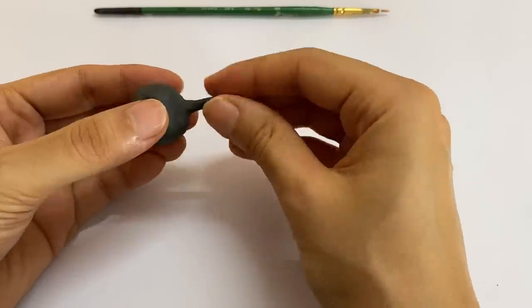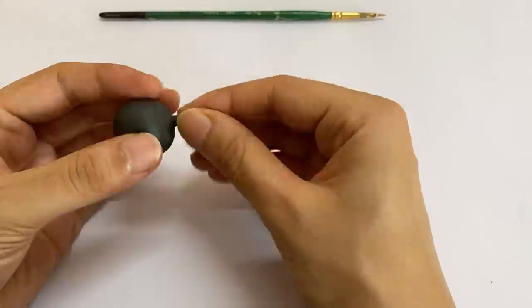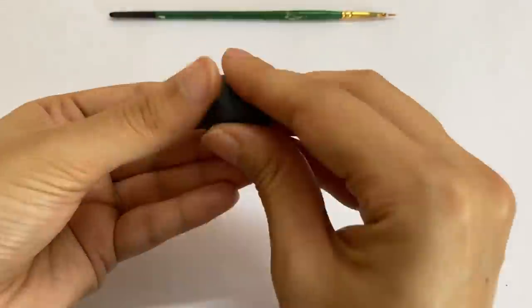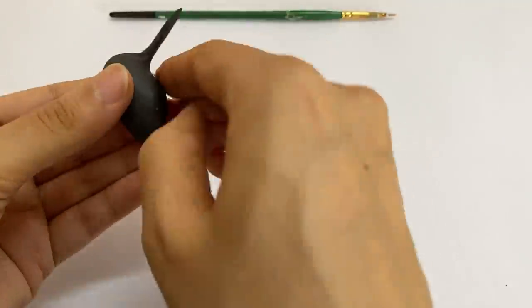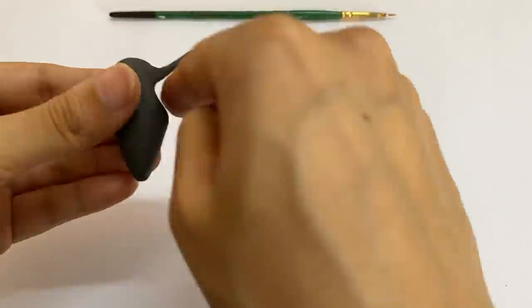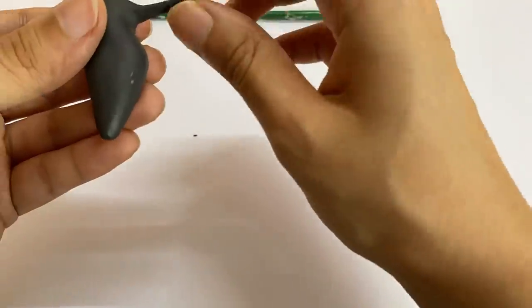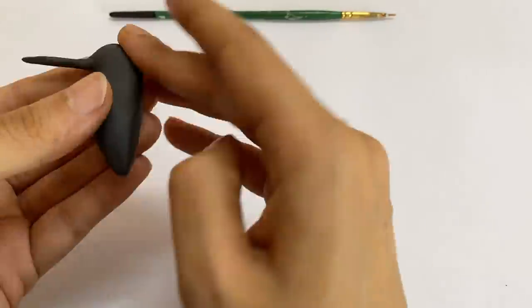Once you are satisfied with how the beak looks, start sculpting the body of the bird. Try to create a depression under the throat by pushing the clay inwards. By doing so, you are automatically going to get a nice rounded belly. Then start working on the head, try to round up the head and slowly try to narrow down the tail portion.